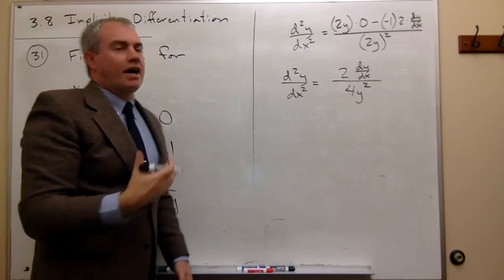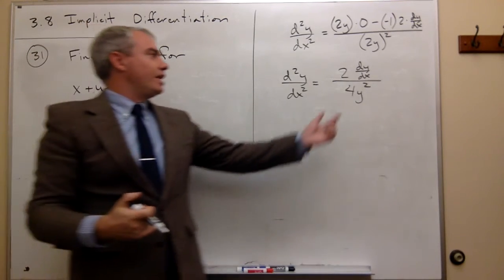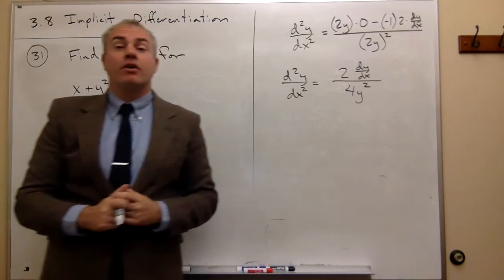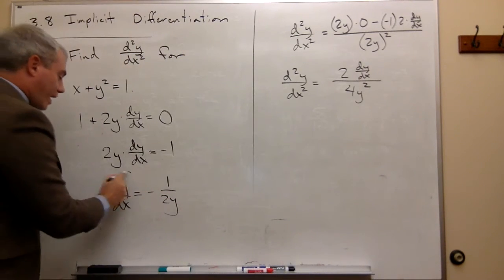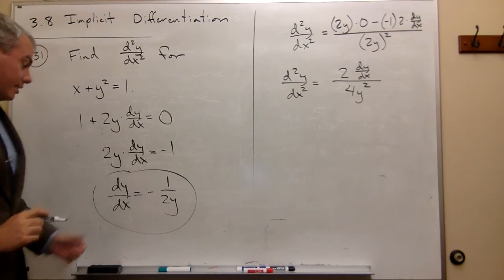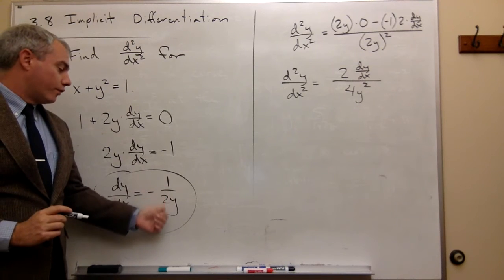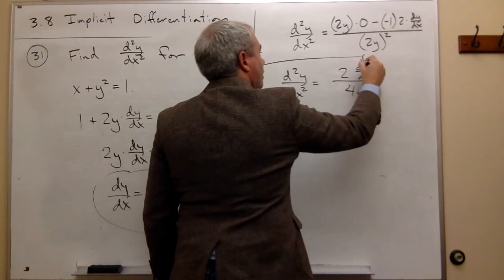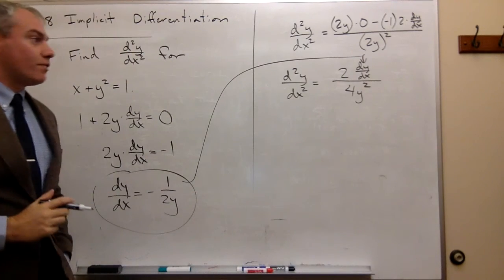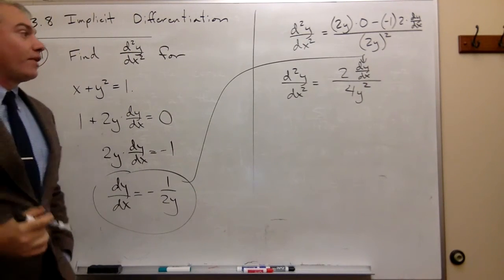Now, this is kind of a problem because I have in the answer dy dx, and we don't like that very much. So I can fix that by saying, oh, wait, I know what dy dx is. It's negative 1 over 2y. So I'll just take that negative 1 over 2y and plug it in right here for dy dx to get my final answer.